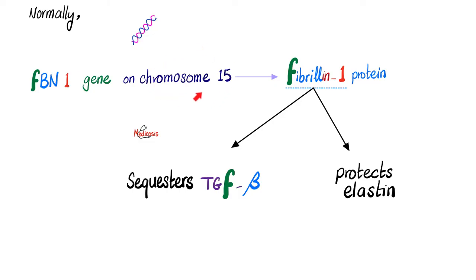On chromosome 15, there is a gene called FBN1, which codes for fibrillin-1 protein. Fibrillin-1 has two functions: it sequesters TGF-beta — meaning it keeps TGF-beta in check, in check — and it covers and protects elastin, which is an elastic protein in your connective tissue.